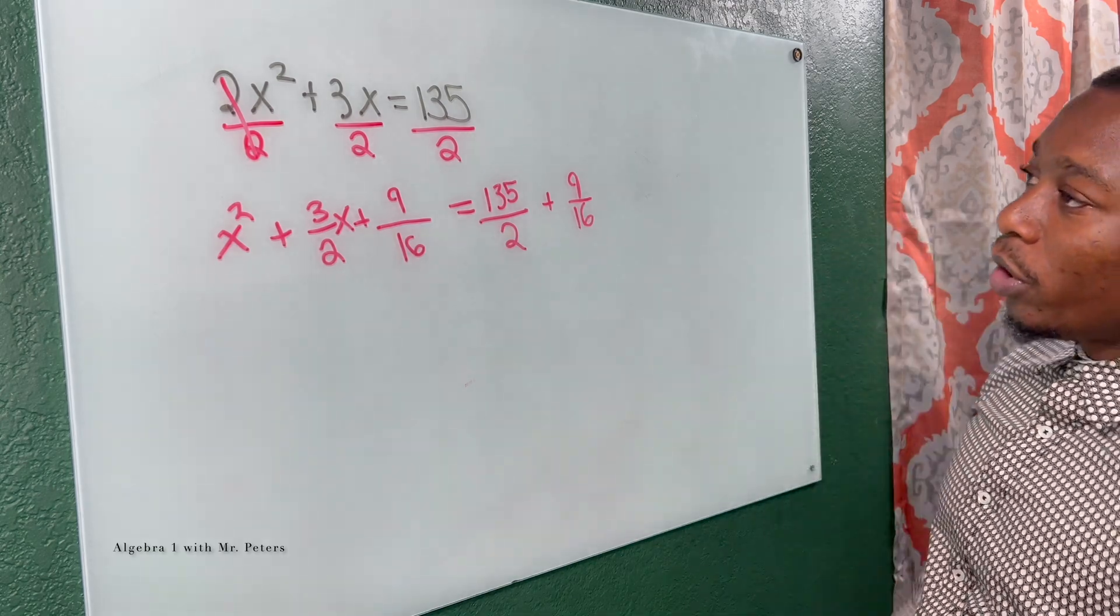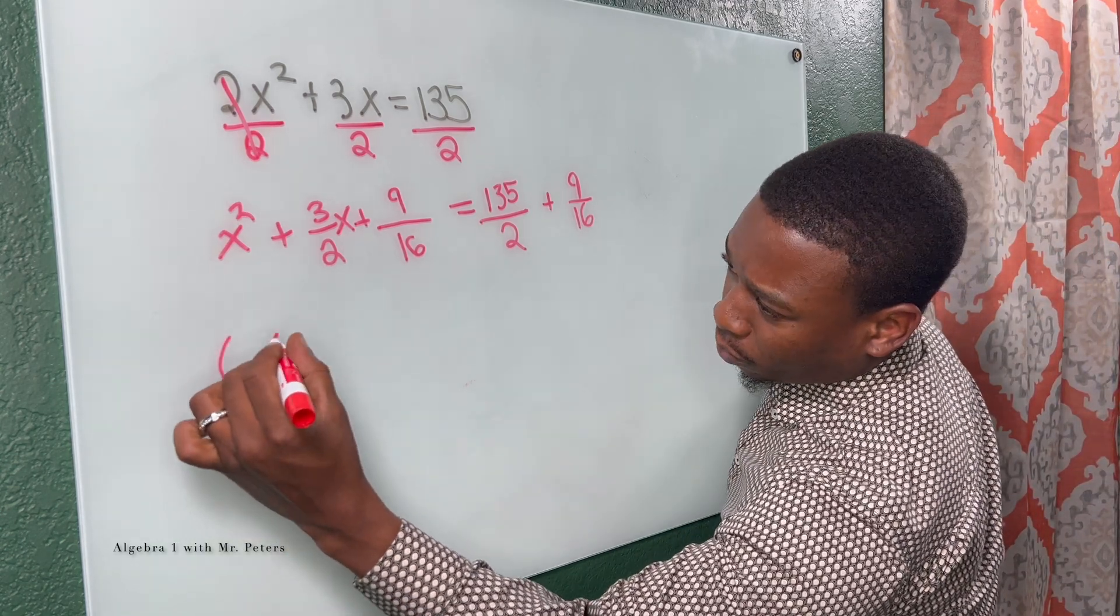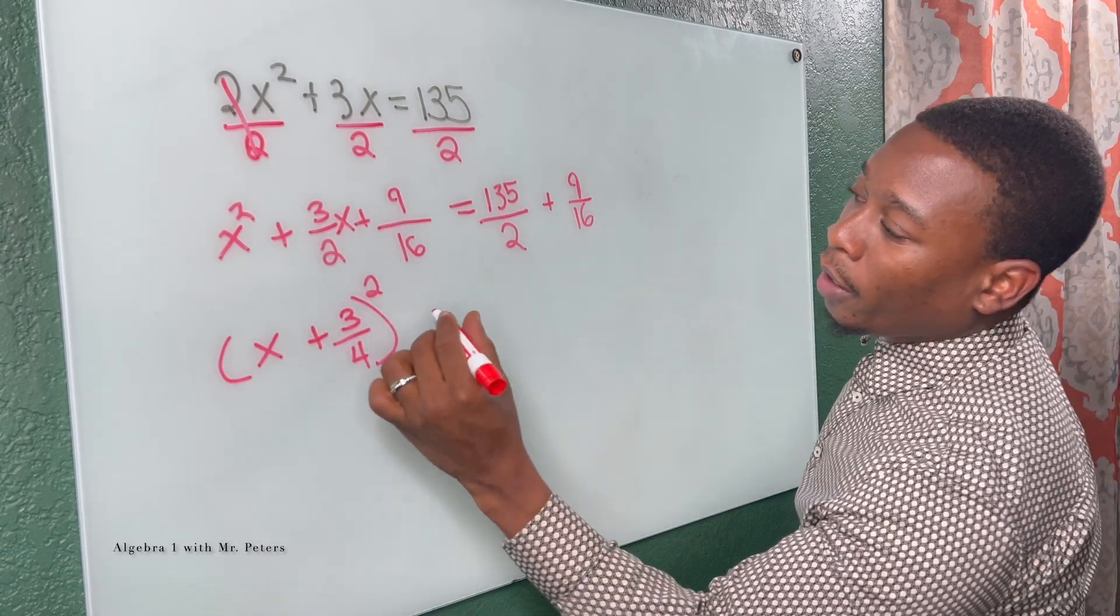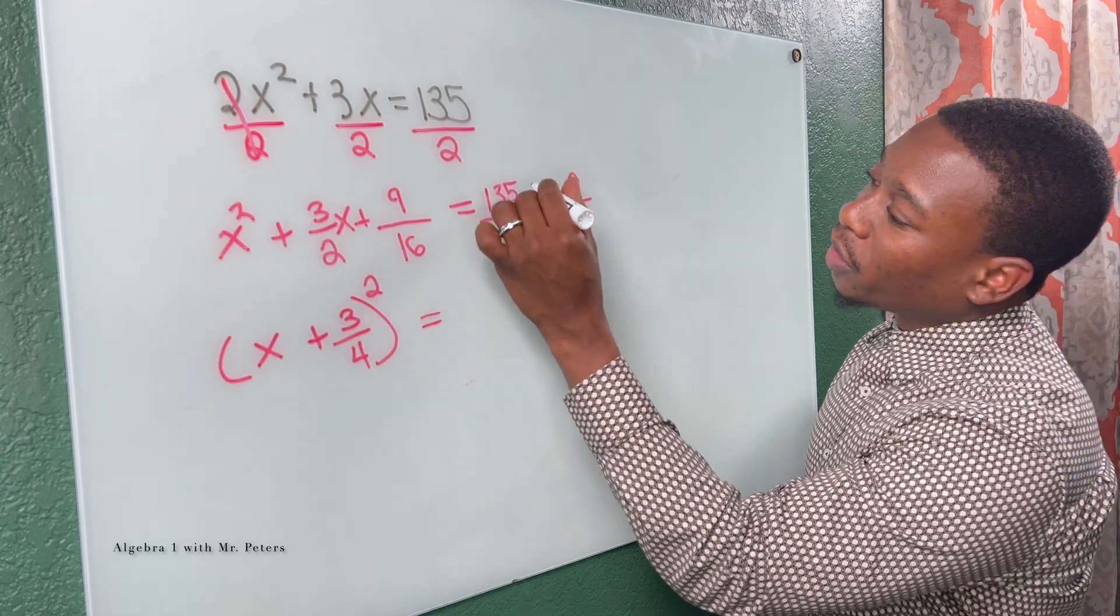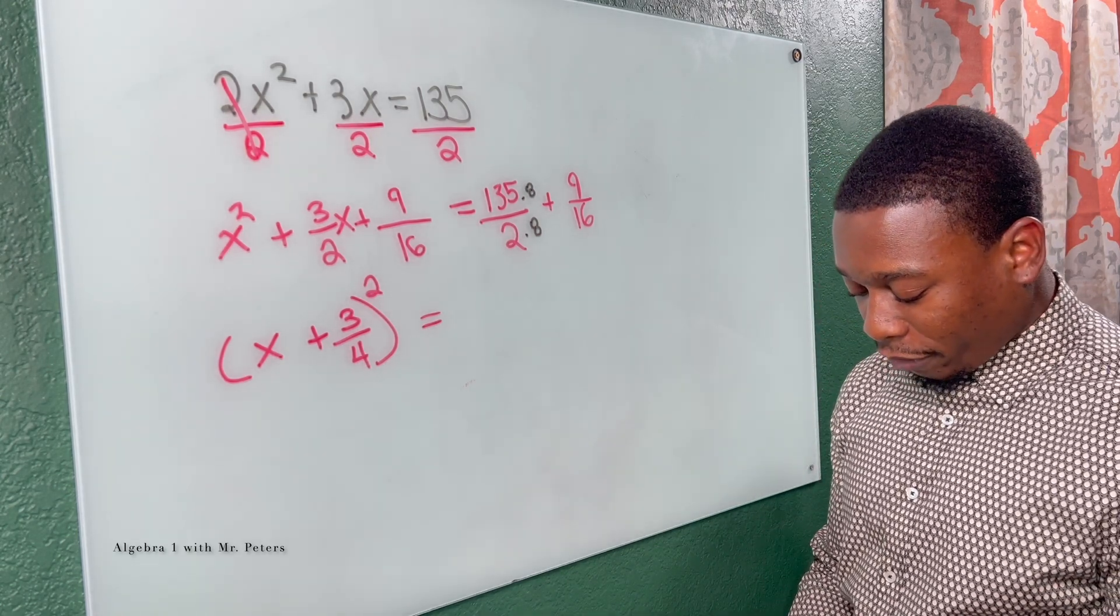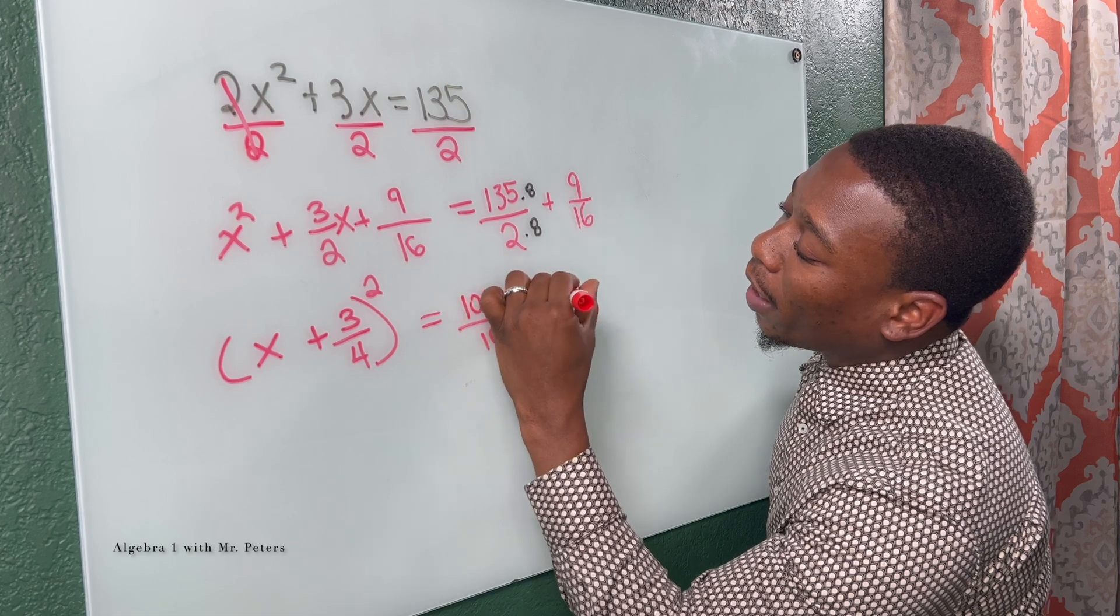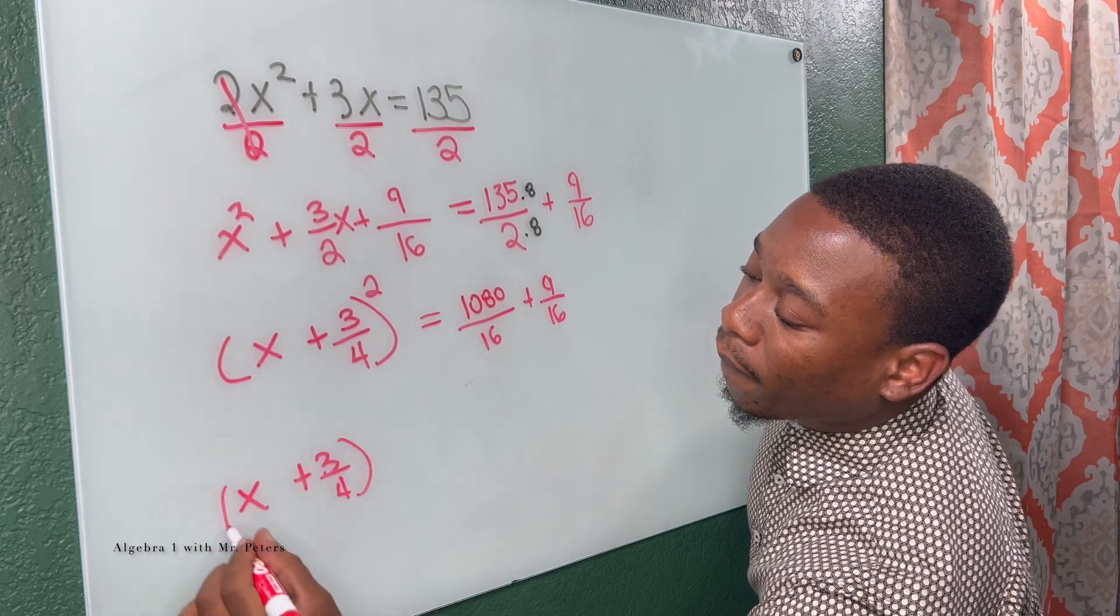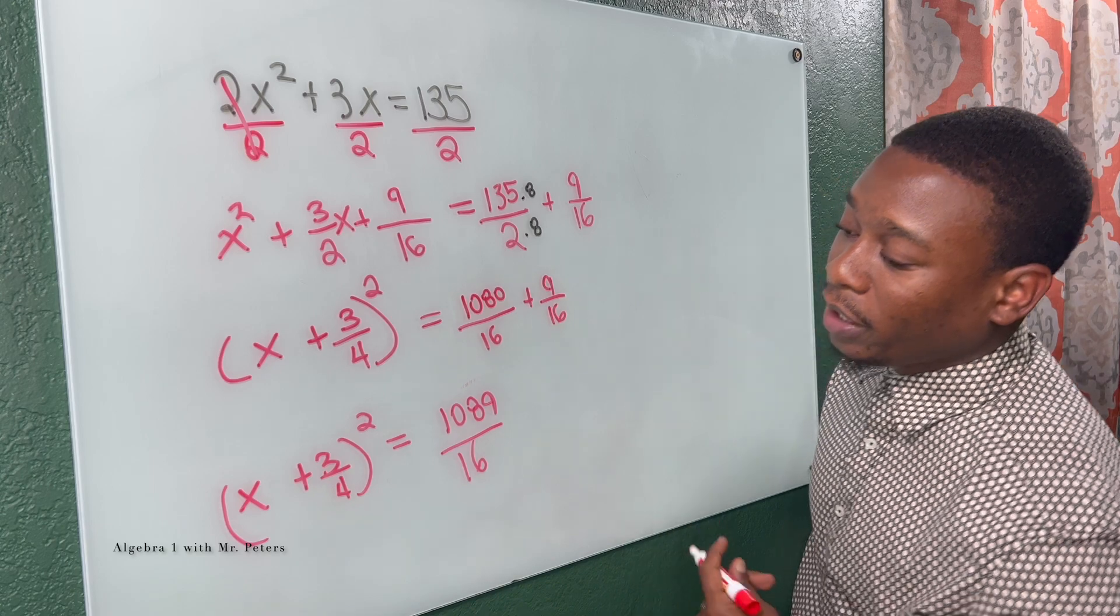So now that we got that, we're gonna say to ourselves, what was the binomial that got us there? We should know it was X plus three over four squared. And what we're gonna do with this problem is multiply both top and bottom by eight so we have the same common denominator. So this is gonna give us 1080 over 16 plus nine over 16. So when I simplify one step further, we have X plus three over four squared is equal to 1089 over 16.